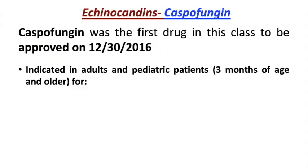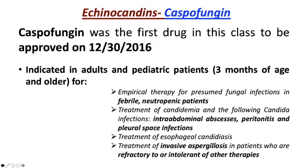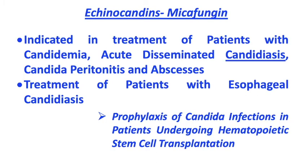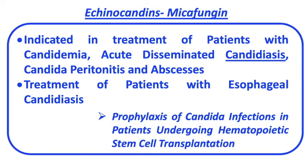These drugs are newer; the first drug was approved in 2016 and is indicated in adults and pediatric patients 3 months and older for fungal infections. Micafungin in particular is indicated for candidemia, acute disseminated candidiasis, Candida peritonitis and abscesses, esophageal candidiasis, prophylaxis of Candida infections, and patients undergoing hematopoietic stem cell transplantation.